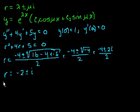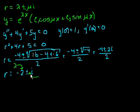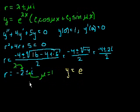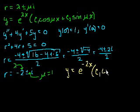So pattern matching: our lambda is minus 2, and mu is the coefficient on i, so mu = 1. Now we can write the general solution: y = e^(-2x) times (c1·cos(x) + c2·sin(x)), since mu = 1.